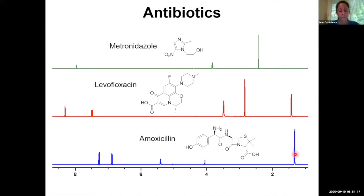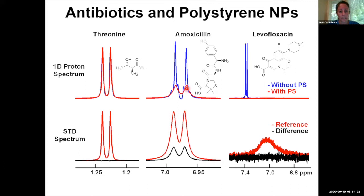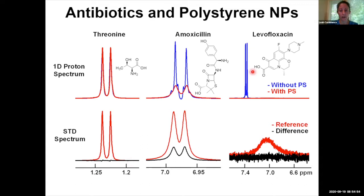Zooming in on one particular peak of amoxicillin and levofloxacin: when we add the polystyrene beads, the peak for amoxicillin broadens, indicating binding, as shown by the positive STD effect in the STD spectrum. On the other hand, threonine — an amino acid that doesn't bind, used as a negative control — shows no broadening in the 1D proton spectrum and no STD effect.